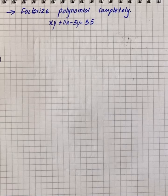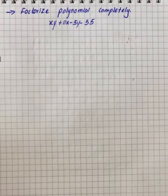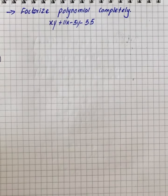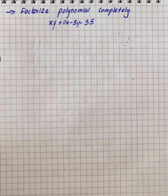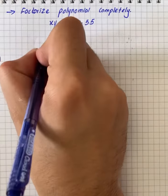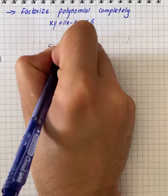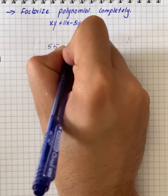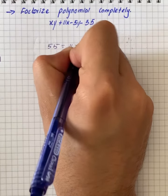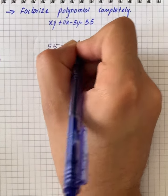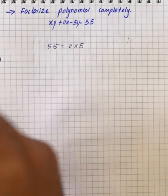First of all, we can see that x is common in xy and 11x, and minus 5 is common in minus 5y and minus 55. So we can write that 55 is equal to 11 multiplied by 5.